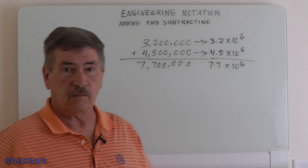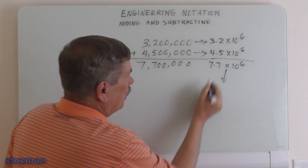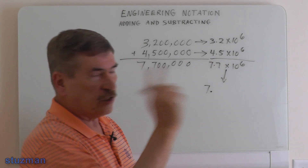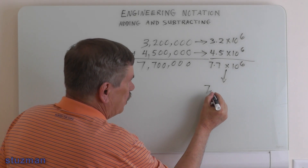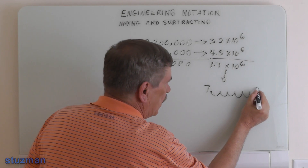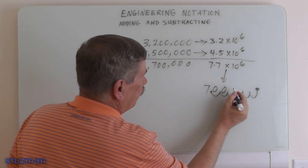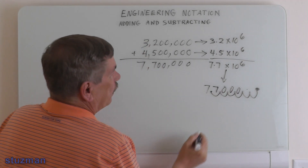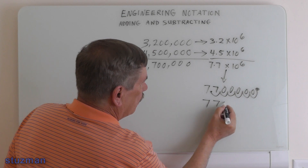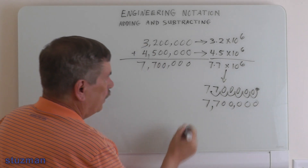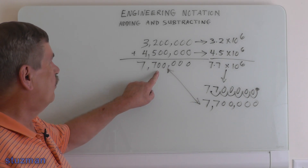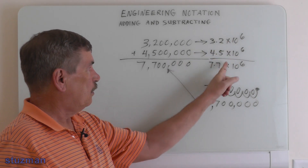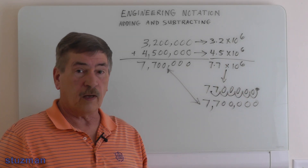Let's verify by converting 7.7 times 10 to the 6th back to decimal. The decimal point moves six places to the right, giving us 7,700,000 — the same answer. You can see that the engineering notation shorthand is a lot simpler than writing out all those zeros in the long decimal form.